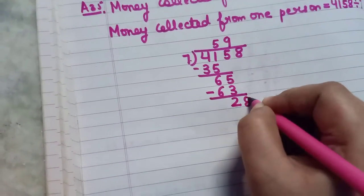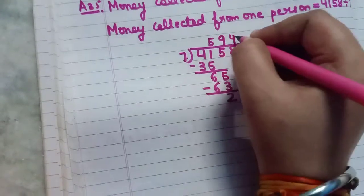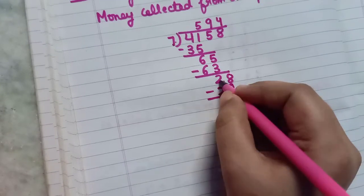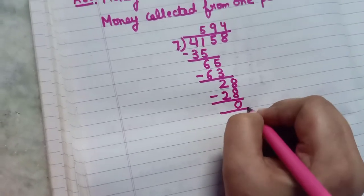Now copy down 8. 7 fours will be equal to 28. Now 8 minus 8 will be equal to 0, and 2 minus 2 will also be equal to 0.